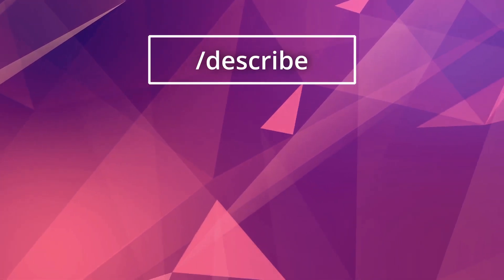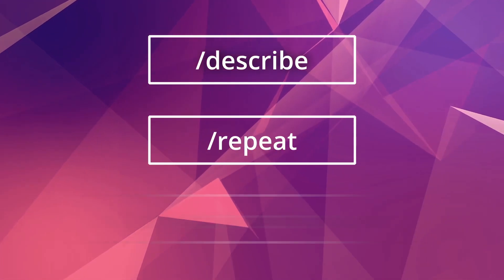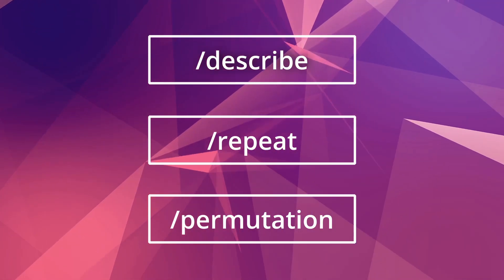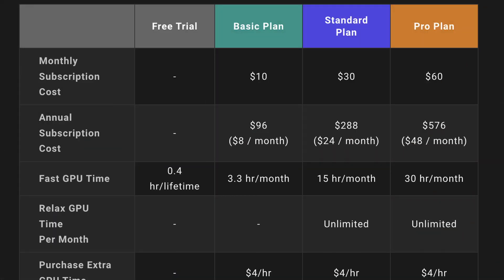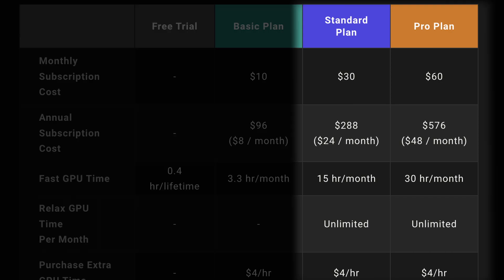Hello everyone! Today I would like to share with you some new features on MidJourney version 5. I'm talking about Describe, Repeat, and Permutation. Describe can be used by anyone for free, but Permutation and Repeat can be used only for standard and pro membership.